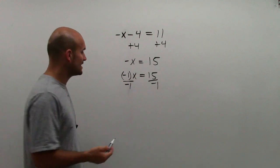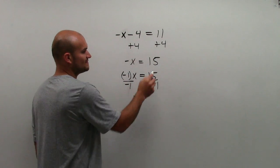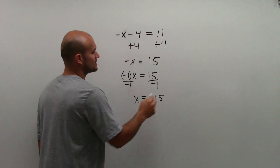So I divide by a negative 1. Negative 1 divided by negative 1 is 1. 1 times x is x. Equals 15 divided by negative 1, which equals negative 15.